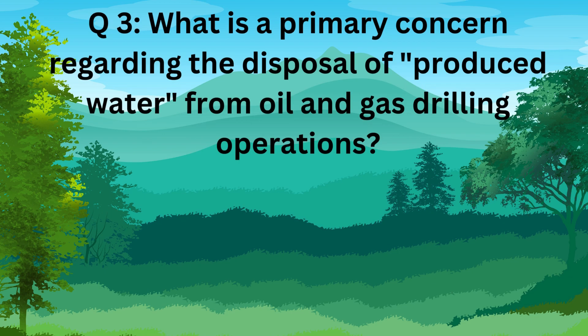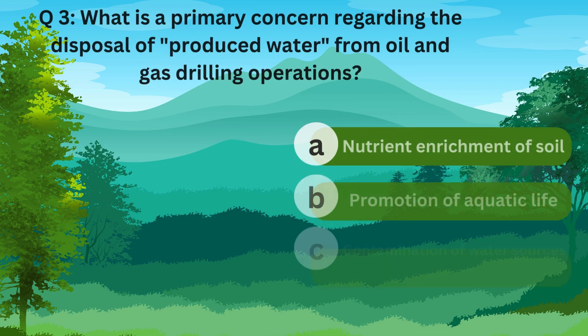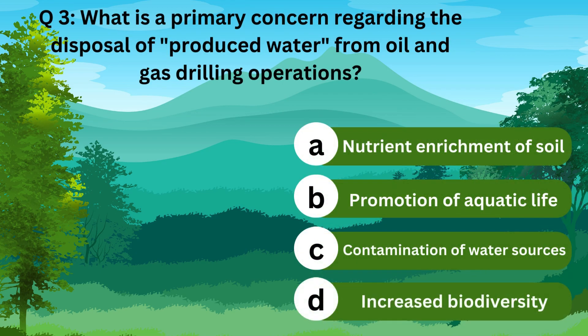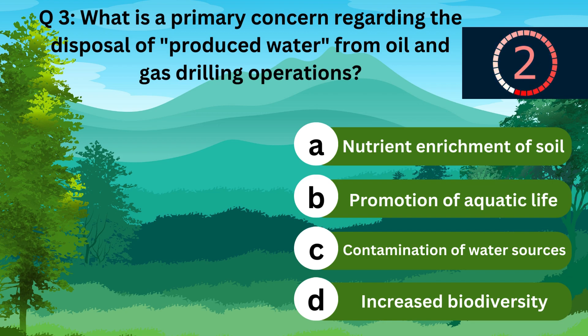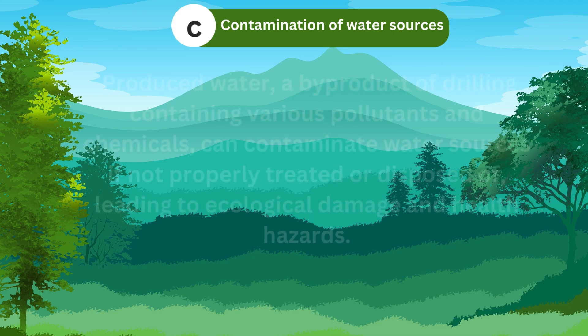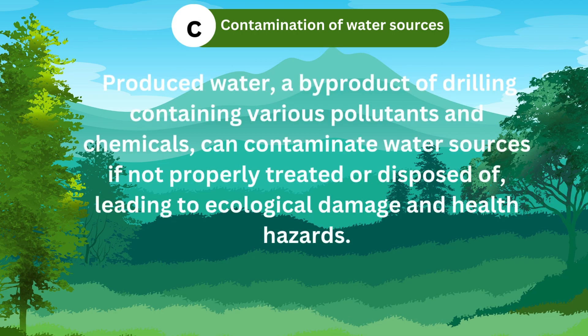Question 3. What is a primary concern regarding the disposal of produced water from oil and gas drilling operations? A. Nutrient enrichment of soil. B. Promotion of aquatic life. C. Contamination of water sources. D. Increased biodiversity. The correct answer is C. Contamination of water sources.